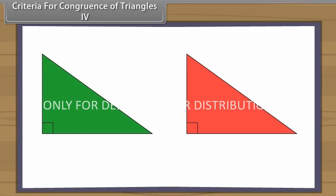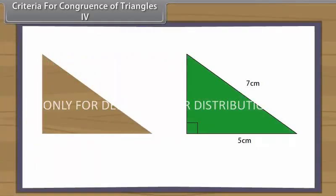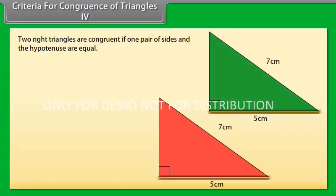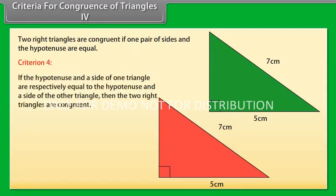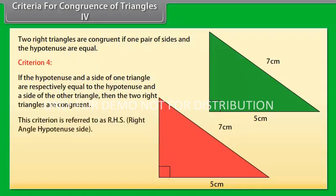Criteria for congruence of triangles 4. Now construct two right-angled triangles with hypotenuse equal to 7 cm and one side equal to 5 cm each. Cut them out and place one triangle over the other with equal sides placed on each other. We will observe that the two triangles cover each other completely, so they are congruent. Two right triangles are congruent if one pair of sides and the hypotenuse are equal. Criterion 4: if the hypotenuse and a side of one right triangle are respectively equal to the hypotenuse and a side of the other triangle, then the two right triangles are congruent. This criterion is referred to as RHS — Right Angle Hypotenuse Side.